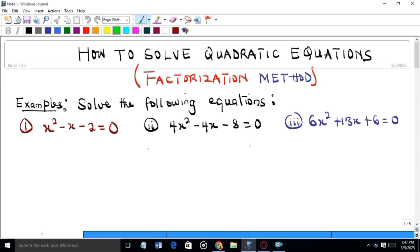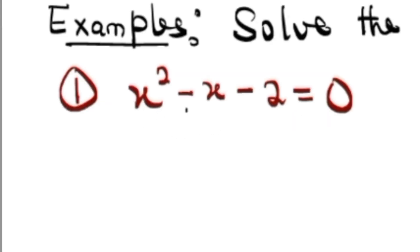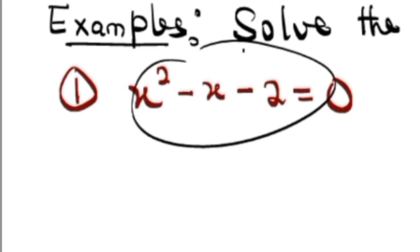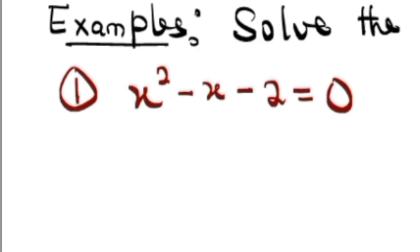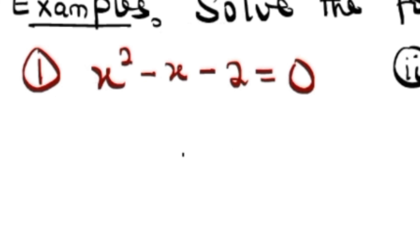Let's see how to solve quadratic equations using the factorization method. We will solve x² - x - 2 = 0 using the factorization method.